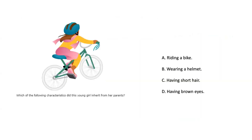Which of the following characteristics did this young girl inherit from her parents? A, riding a bike; B, wearing a helmet; C, having short hair; or D, having brown eyes?